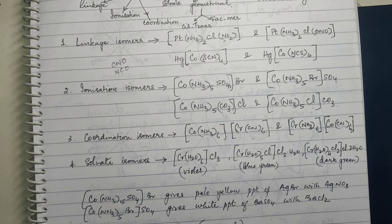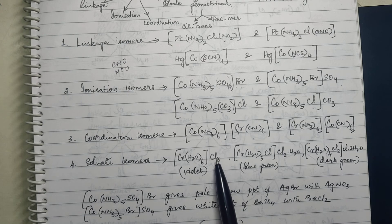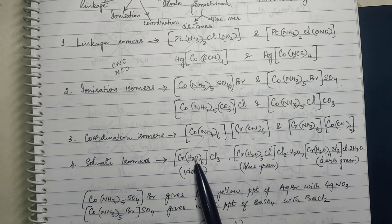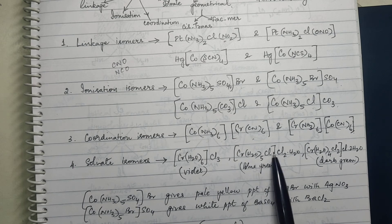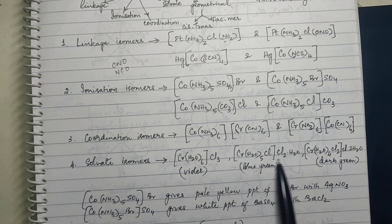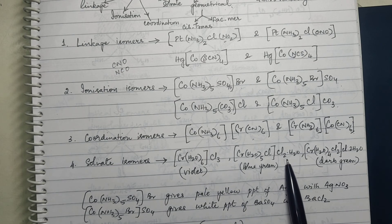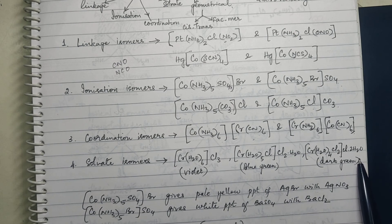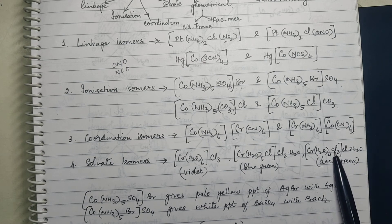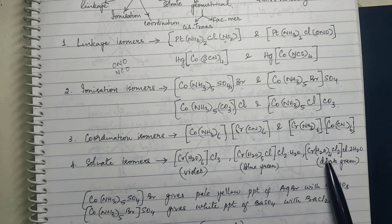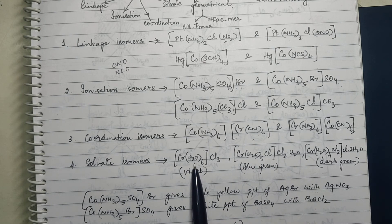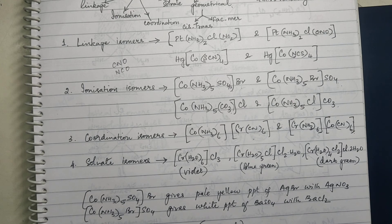For solvate isomers, consider [Cr(H₂O)₆]Cl₃. If one Cl is taken inside, the coordination number becomes seven, so one water must come out, giving [Cr(H₂O)₅Cl]Cl₂·H₂O — a monohydrate. One more Cl can be taken inside and another water brought outside, giving [Cr(H₂O)₄Cl₂]Cl·2H₂O. The coordination number is preserved throughout: six in each case (four plus two, five plus one, and six).